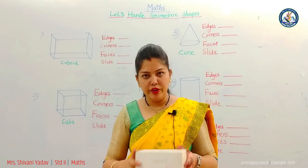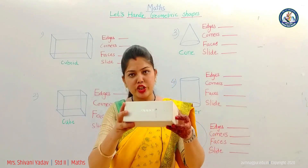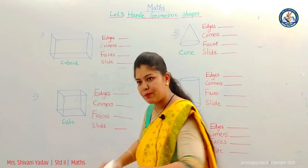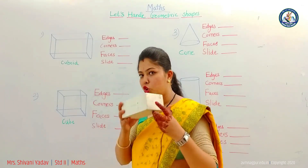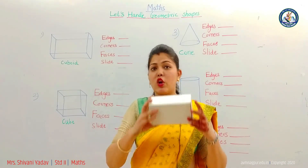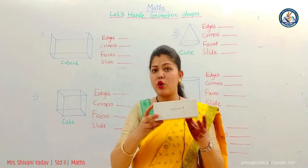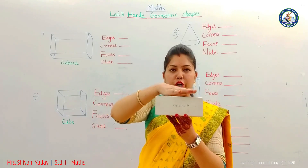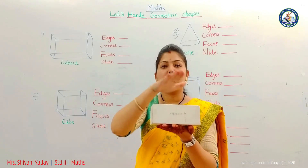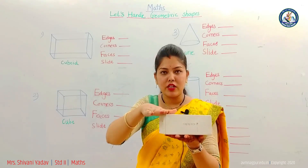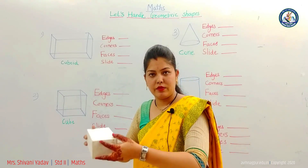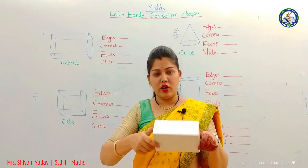If we put this cuboid shape box on a slide, what happens? It just slips down. It does not roll. Why does it not roll? Because on top and on bottom it has a plain surface. So a cuboid has a plain surface — because of its plain surface it just slips. It does not roll.